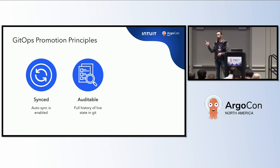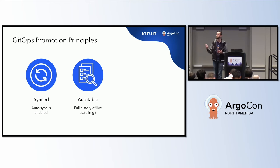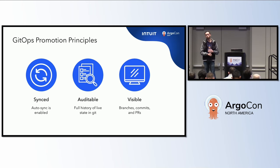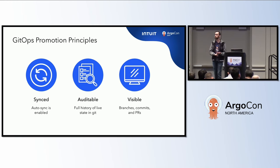Second, we want a full history of your live state in Git — that's something else you lose when you don't have auto-sync on. At Intuit, when there's an incident, we dig through piles of Jenkins logs and Argo CD API logs to understand what the live state was when the problem occurred. Our tool should give you full history in a Git branch. Finally, we think the entire state of your system should be visible using only your source control management software — the Git tools your developers already know and love. If you want to know your desired state, your live state, and the state of any ongoing promotions, the only things you should have to look at are branches, commits, and pull requests. No digging through Jenkins logs.